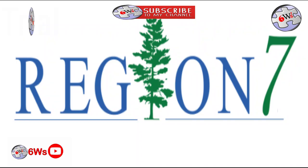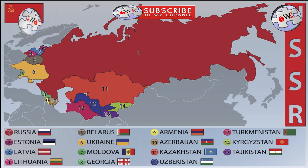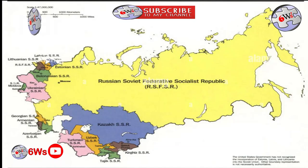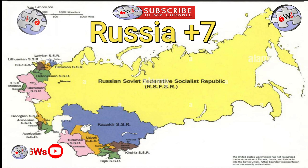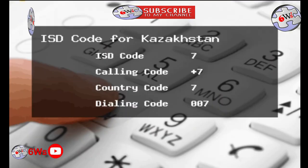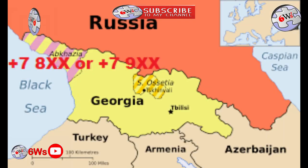Region number 7 is for Russia, Kazakhstan and Abkhazia — countries that were formerly part of the USSR. These countries did not switch to the new country code 3 or 4 after separation from the Soviet Union. Russia's country code is simply 7, while Kazakhstan's country code is 76XX or 77XX, and Abkhazia's is 78XX or 79XX.